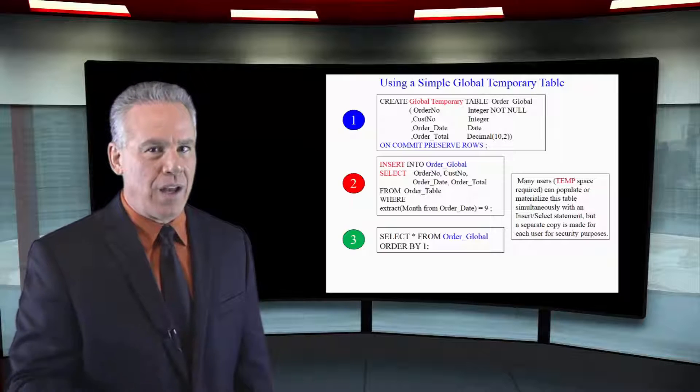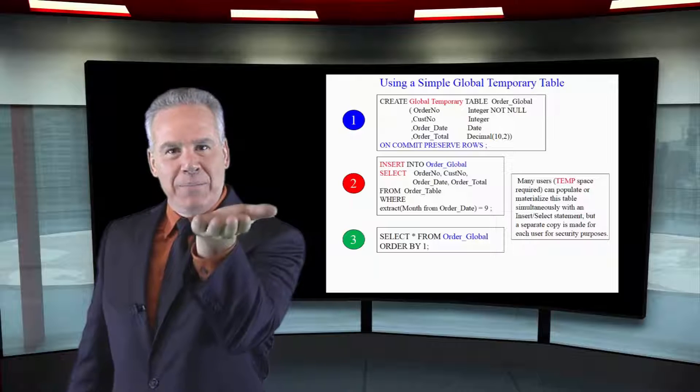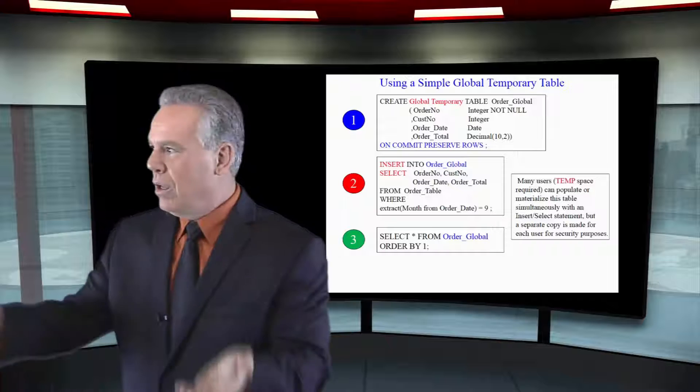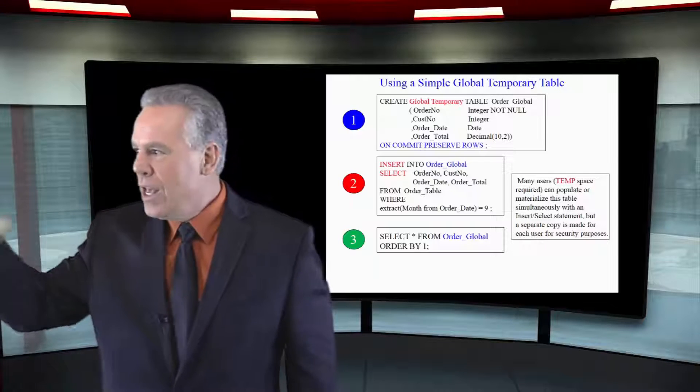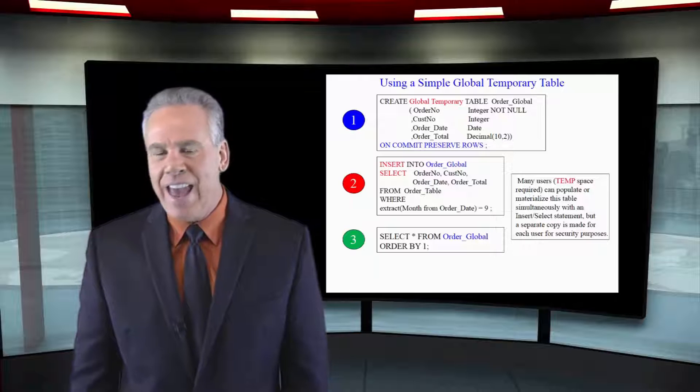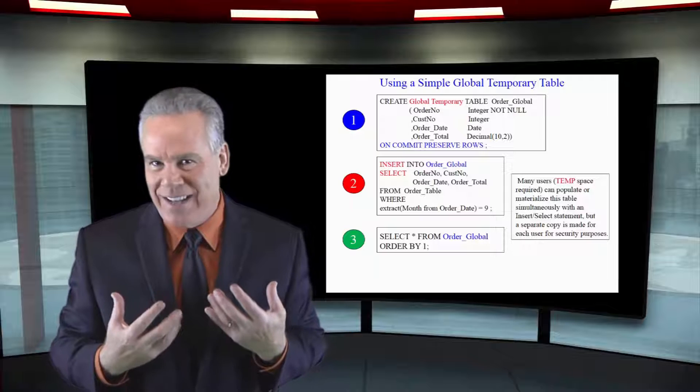But there's one other caveat. Once you create the global temporary table, if you give people permission, 2,000 people can do an insert select on that table simultaneously and they all have their own instance of the table. Nobody ever shares the data.